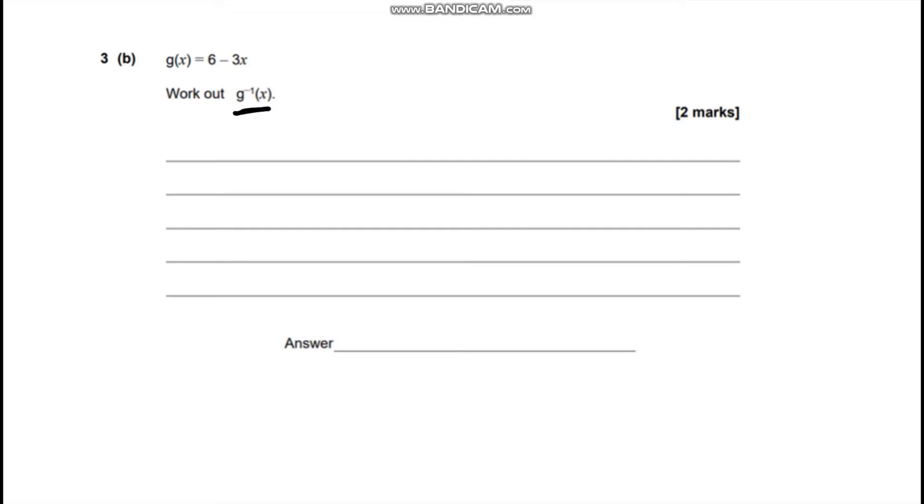So the way we're going to do that is by using a little trick. We're going to replace g(x) with x, and we're going to take our x here and replace it with the inverse function g to the negative 1 of x.